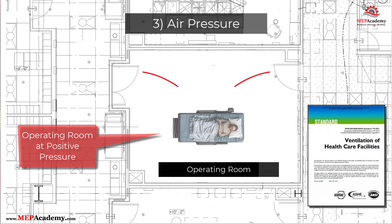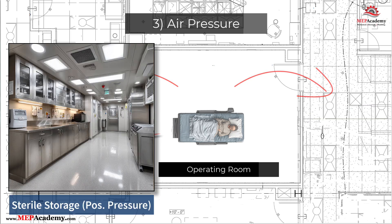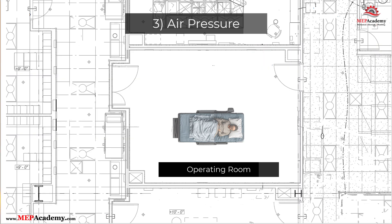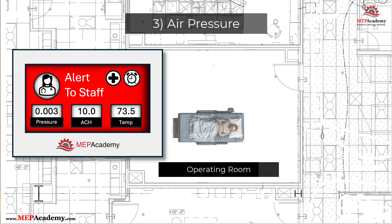The operating room is positively pressurized compared to corridors and adjacent support spaces. Sterile storage rooms are also positively pressurized to protect clean supplies. In contrast, soiled utility rooms or decontamination areas are kept at negative pressure to contain contaminants. These pressure differentials are actively monitored using sensors and pressure gauges. If pressure drops below the required threshold, alarms are triggered to alert staff. This directional airflow ensures that airborne particles from dirtier areas cannot flow into sterile spaces — critical for infection control.